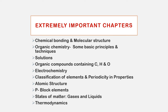The next chapter is Organic Chemistry: Basic Principles and Techniques. I will cover basic principles and estimation methods for elements: Fluorine, Sulphur, Bromine, Carbon, and Hydrogen. The methods include the Kjeldahl method, Dumas method, and Carious method. These methods generate exam questions.